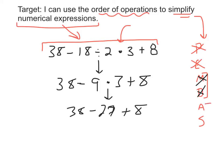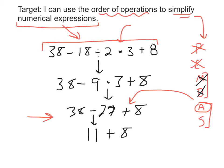My next step is to look for additions and subtractions. Additions and subtractions work similarly to how multiplication and division works — you do it in order from left to right. So although addition comes before subtraction in PEMDAS, I'm not going to jump forward to the addition. I'm simply going to do it in order from left to right. So my next step is going to be a subtraction. 38 minus 27 is 11, so I'm left with 11 plus 8. And that last step is addition — 11 plus 8 is 19.